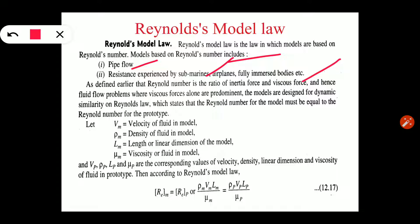As defined earlier, Reynolds number is the ratio of inertia force and viscous force. Fluid flow problems where viscous force alone are predominant — the models are designed for dynamic similarity on Reynolds law. जैसे Reynolds number ratio है inertia force and viscous force का, तो ऐसे problems जिनके अंदर viscous force dominant होंगे उस condition में हम Reynolds model law को use करेंगे। Fluid भी water या air भी हो सकता है।